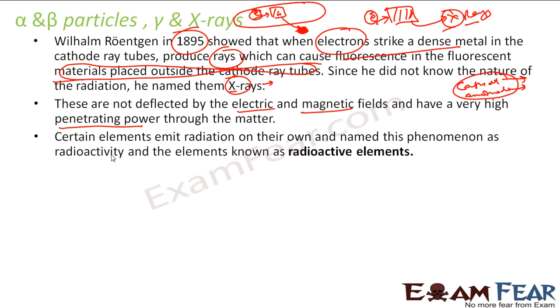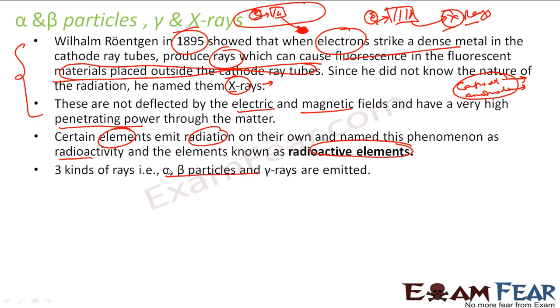Later they found that certain elements emit radiation on their own. This phenomenon is called radioactivity and the elements are called radioactive elements. They emit rays on their own without needing to be bombarded. There are three kinds of rays: alpha, beta and gamma.